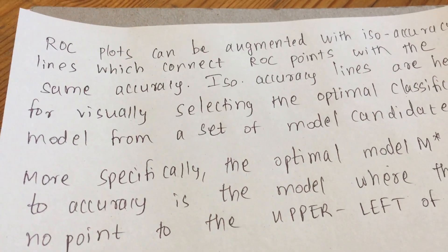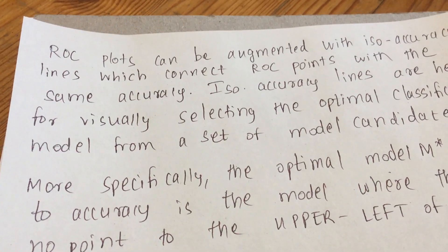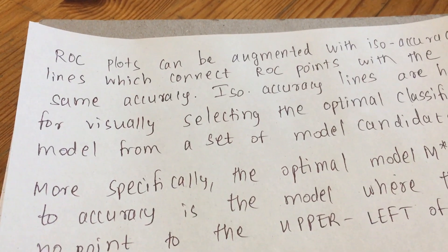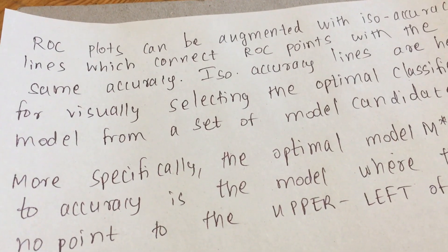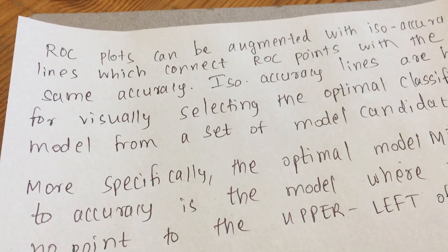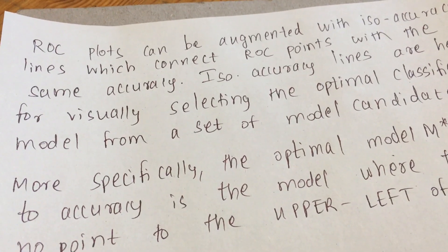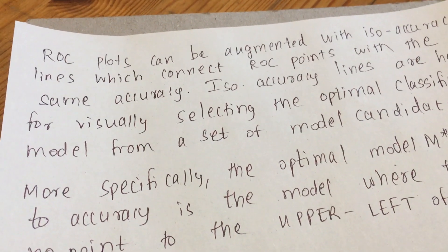Hello everyone, welcome back to my channel. In the previous video we saw what was the ROC, that is the receiver operating characteristic, and AUC, that is the area under the ROC curve. Now in today's video let's see what are iso-accuracy curves or iso-accuracy lines.